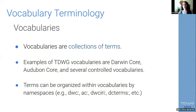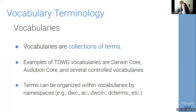So let's start with what vocabularies are. Vocabularies are collections of terms, or bags of terms. Some examples of TDWG vocabularies are Darwin Core — you may have heard of the Darwin Core Standard — the Audubon Core, and there are several controlled vocabularies.